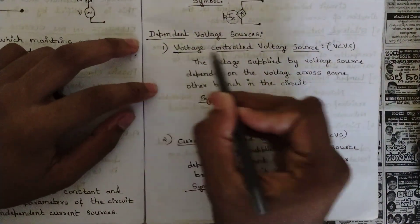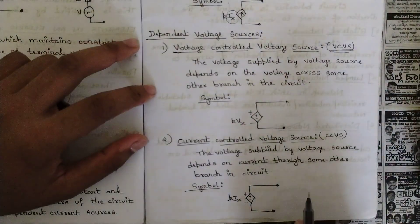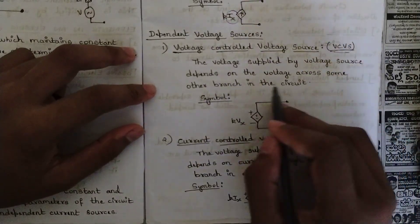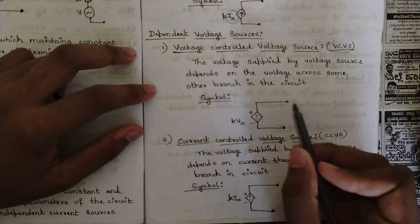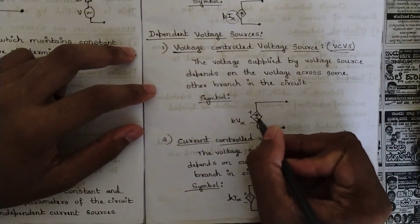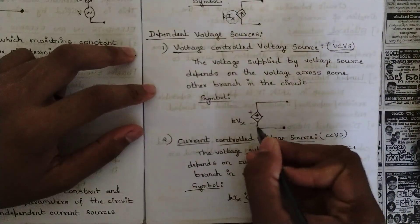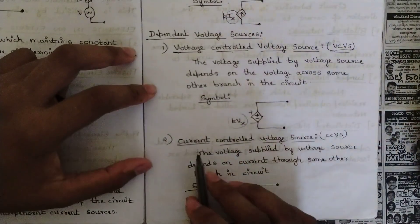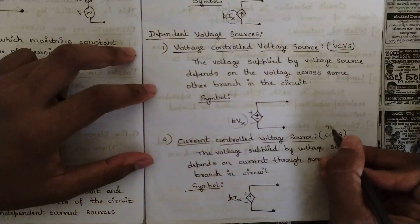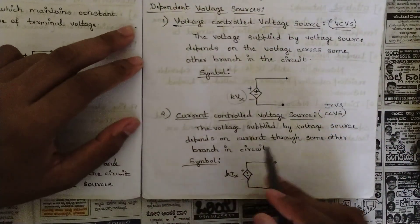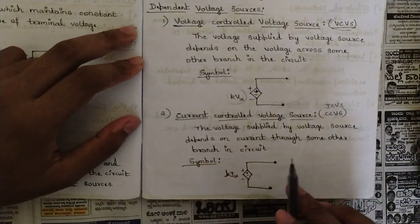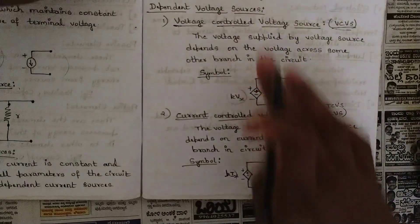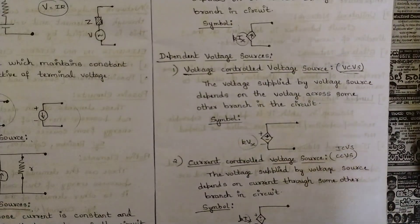For dependent voltage sources: Voltage Controlled Voltage Source (VCVS) — the voltage supplied depends on the voltage across another branch, represented as K×Vx with a diamond symbol. Current Controlled Voltage Source (CCVS) — the voltage supplied depends on the current through another branch. Keep all four dependent source definitions in mind.